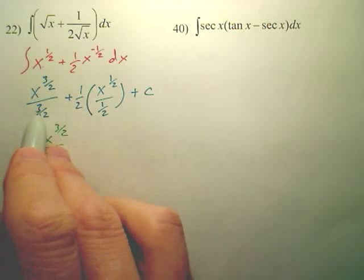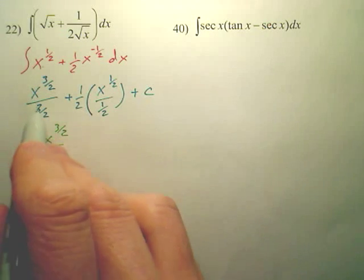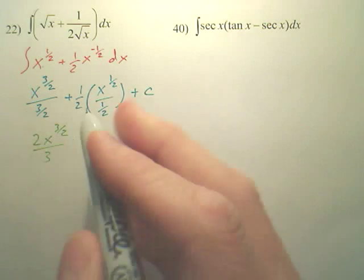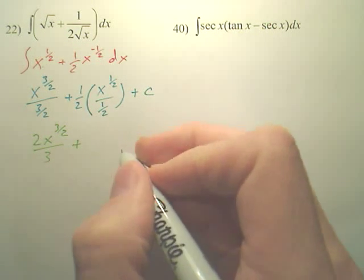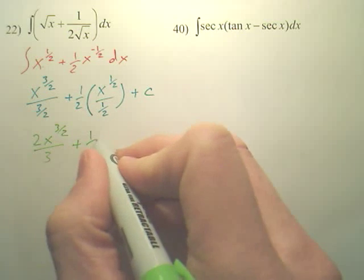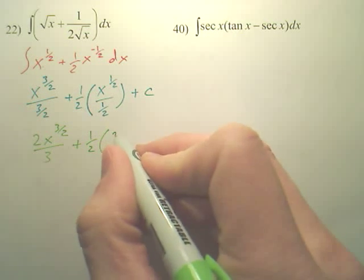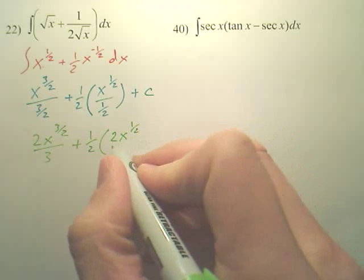That's what it's going to look like. You just take this and flip it, and the bottom goes to the top, and the top stays on the bottom. That kind of didn't sound right. This would be one-half, and this would be two x to the one-half over one.